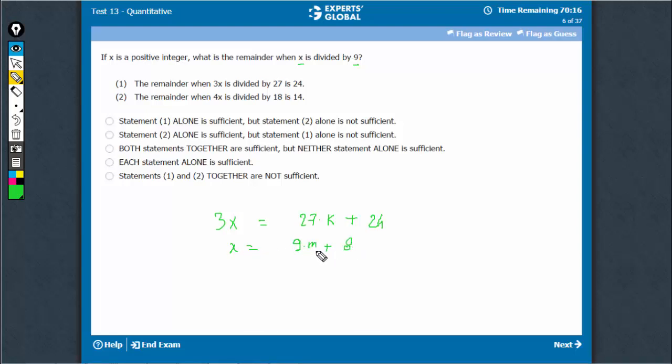x is equal to 9m plus 8, where m is an integer. Therefore, x will leave remainder 8 when divided by 9. Statement 1 is sufficient.